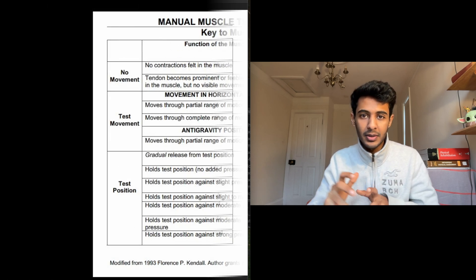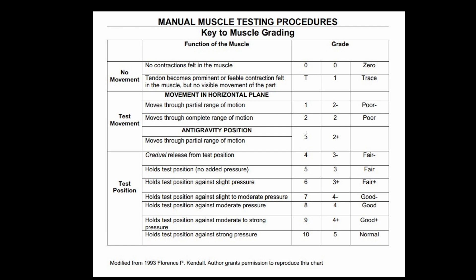To summarize the tricky grades: 2 minus is in the horizontal gravity-eliminated plane but only partial range; grade 2 is full range in gravity-eliminated plane; 2 plus is anti-gravity position but only in the lower half; 3 minus is anti-gravity in the upper half, or gradual release from the test position. Some references also note that horizontal plane movement with some resistance can be graded as 2 plus.